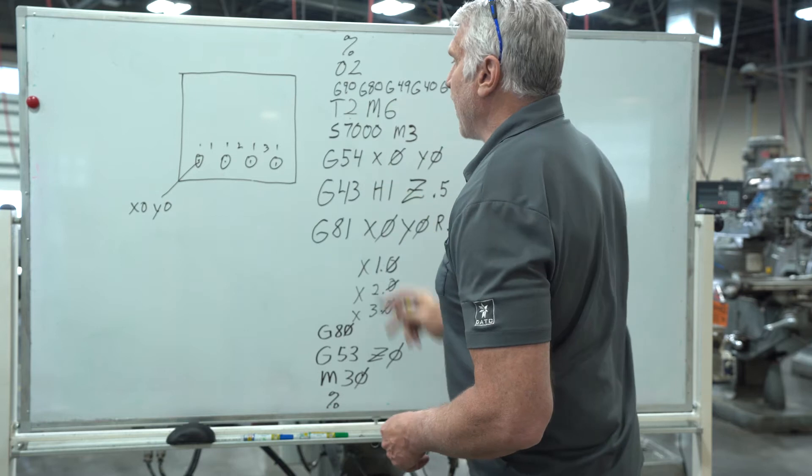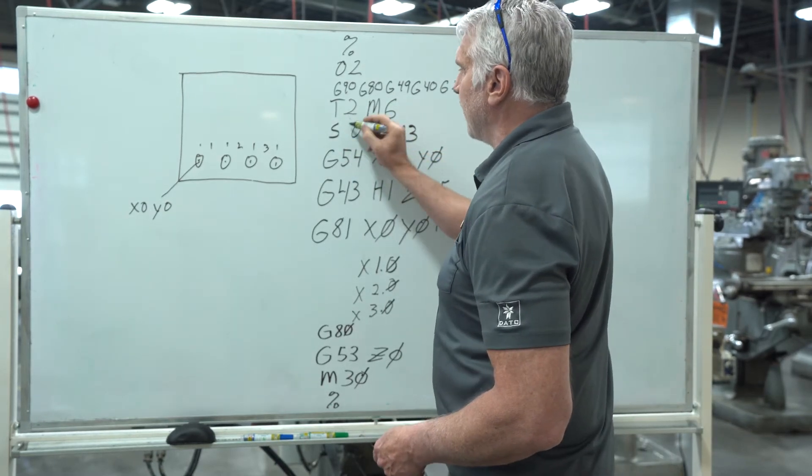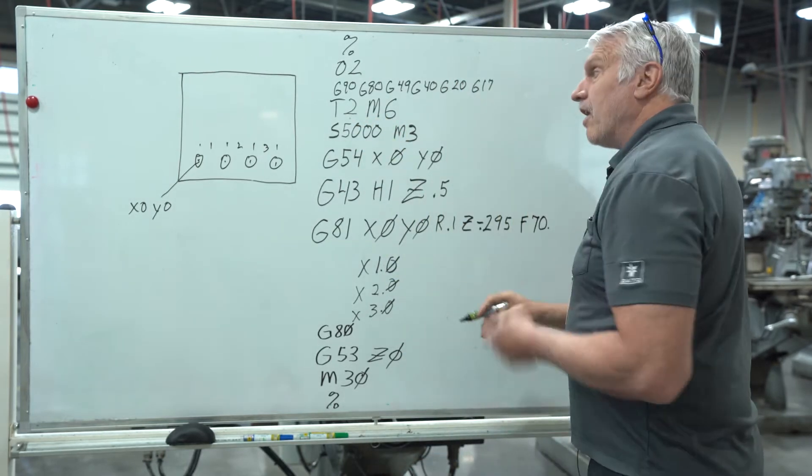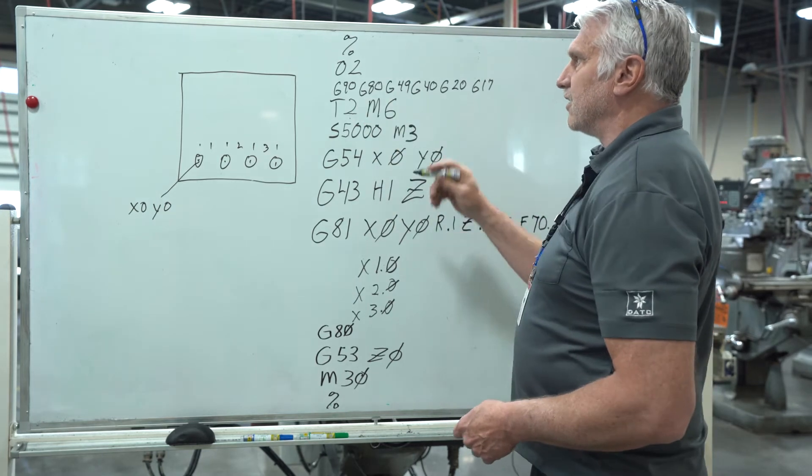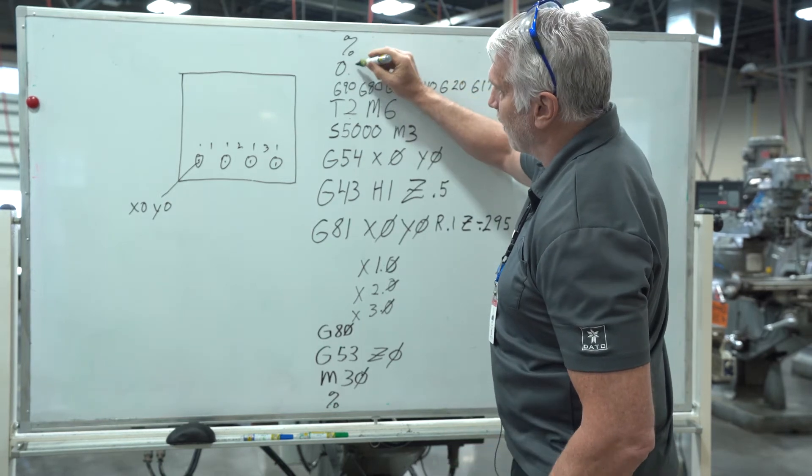So that's all we have to change. The spindle speed might be a little bit different. So instead of 7,000 RPM we're going to go 5,000 RPM. The G54 location where it's going to be our safety line is already there. This is now instead of tool or program two, it's program three.